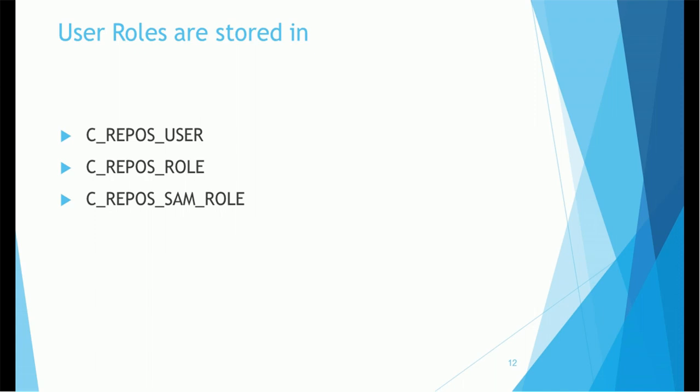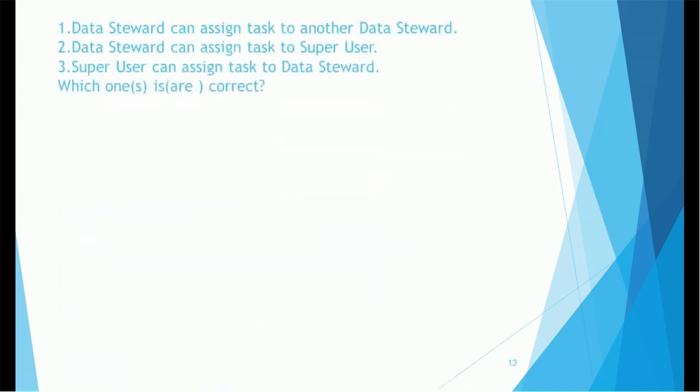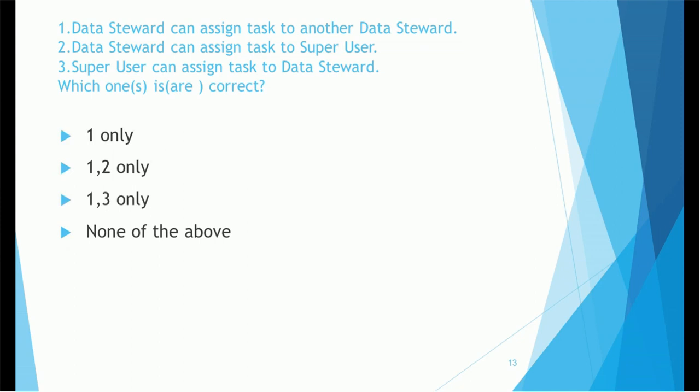Next question: user roles are stored in which repository table? Option 1: C_REPOS_USER. Option 2: C_REPOS_ROLE. Option 3: C_REPOS_SAM_ROLE. It may look confusing but the correct answer is C_REPOS_SAM_ROLE — that is where user roles are stored.